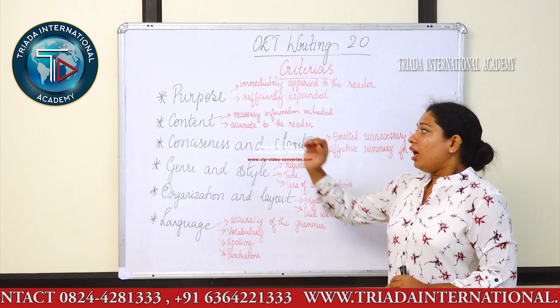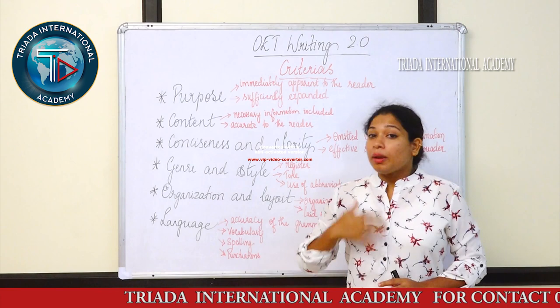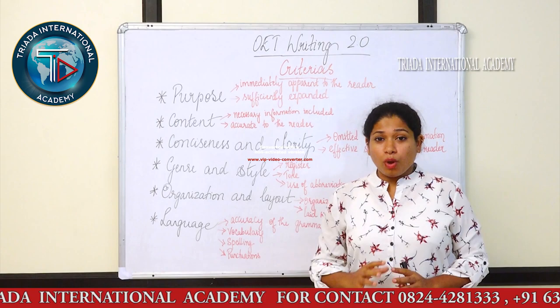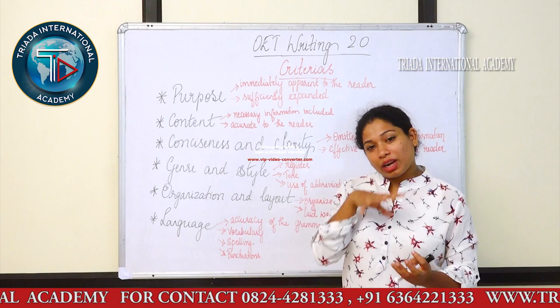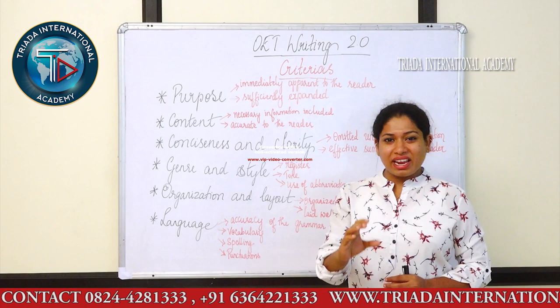We now have six different criteria for writing. Prior to the update, we only had five criteria. Whatever these criteria consist of, they will revolve around three important things of the writing task.